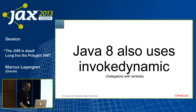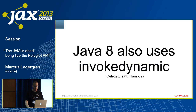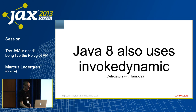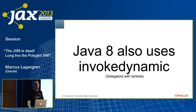Java 8 also uses invokeDynamic for lambdas. We implement them quite heavily using invokeDynamic and it actually now outperforms the old anonymous inner classes approach. That was the crash course in the tools to implement dynamic languages on the JVM.